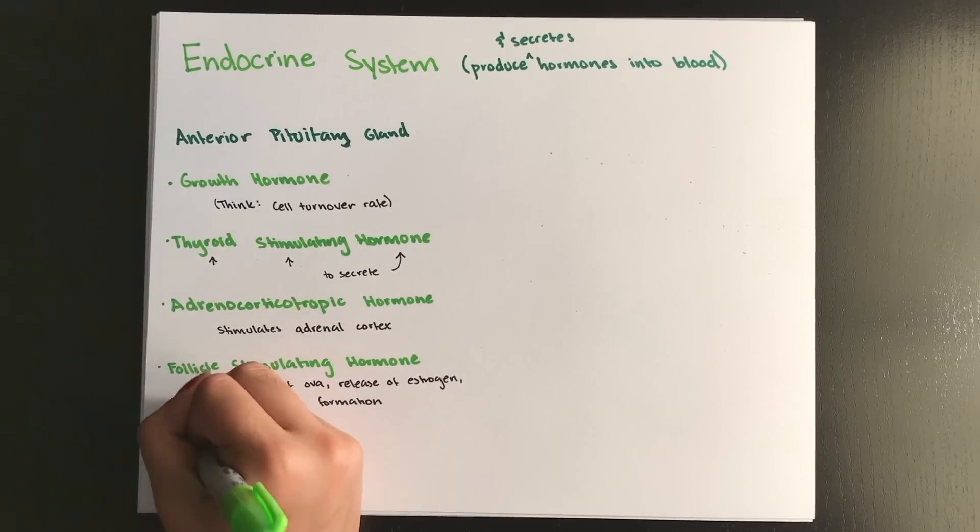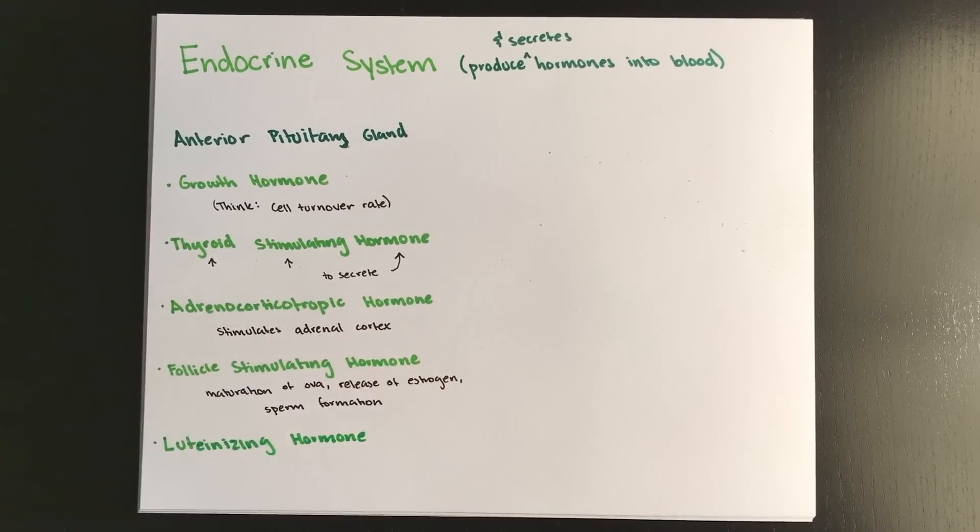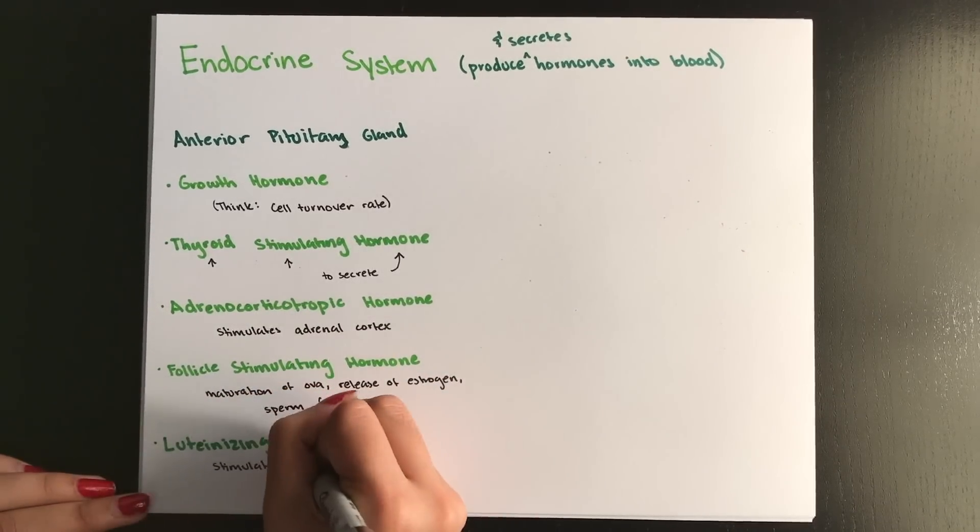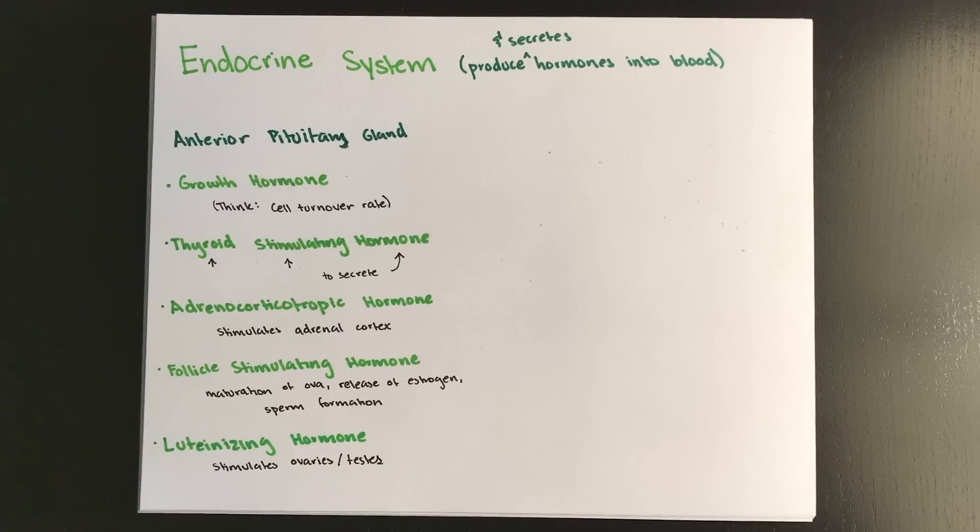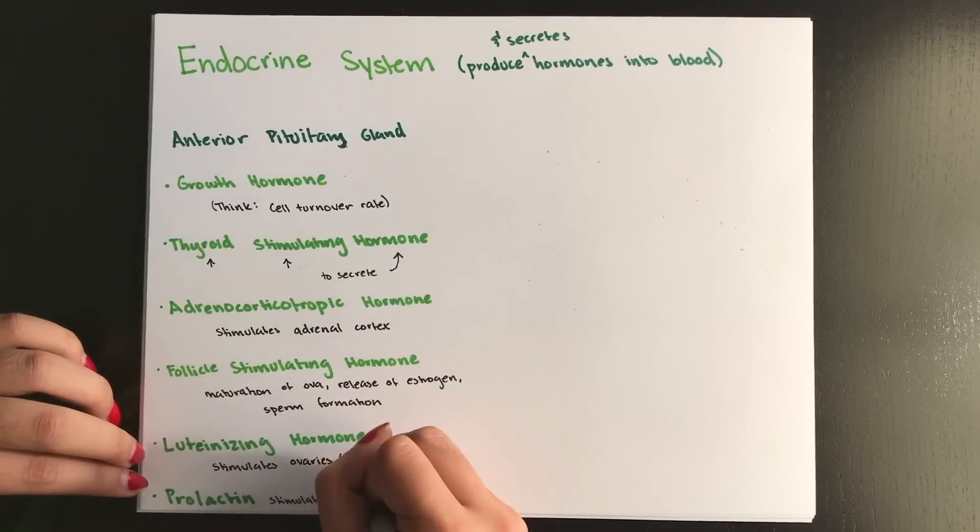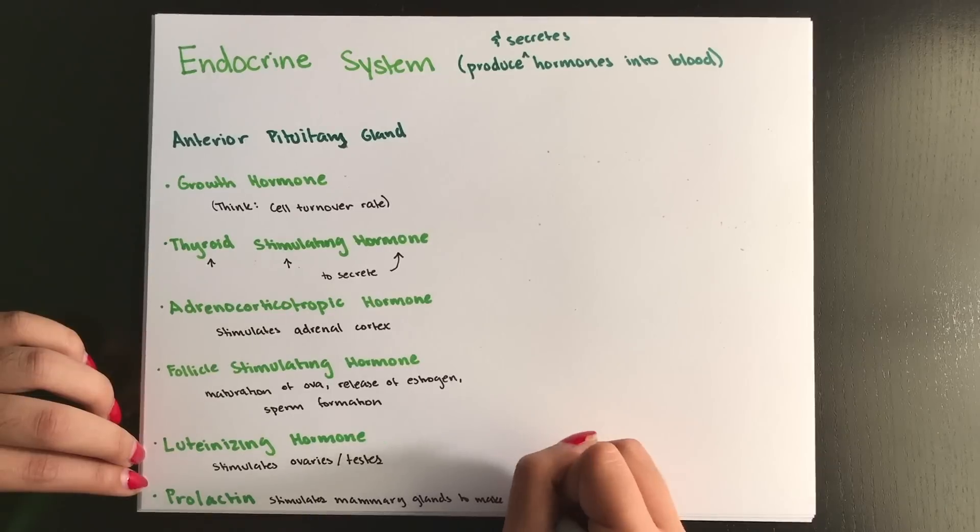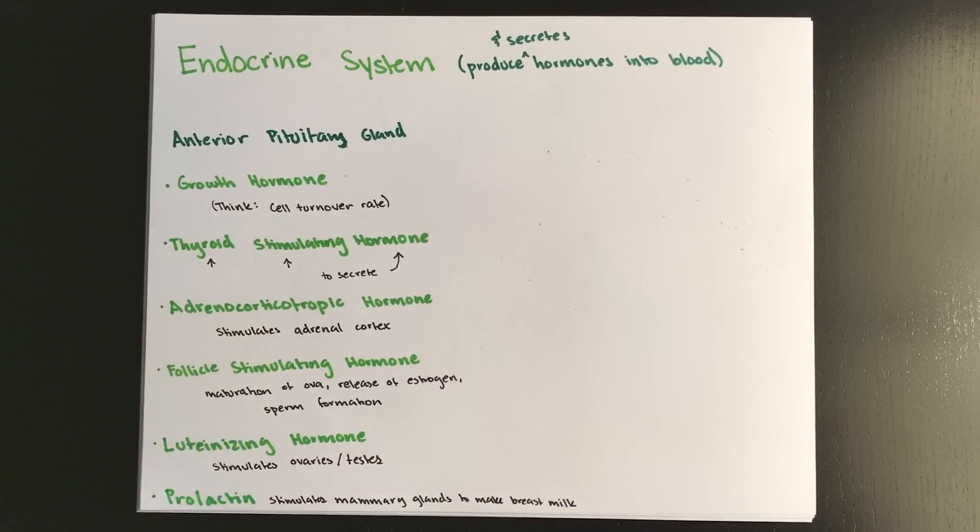Luteinizing hormone stimulates the ovaries in females and the testes in males to make testosterone. Prolactin stimulates the mammary glands to make breast milk. Now for every single hormone that the anterior pituitary will release, there's a corresponding releasing hormone that the hypothalamus releases first. Because remember, the hypothalamus pretty much controls everybody. So this releases a hormone to the pituitary gland and then the pituitary gland will release it to everywhere else.